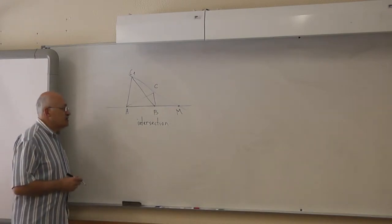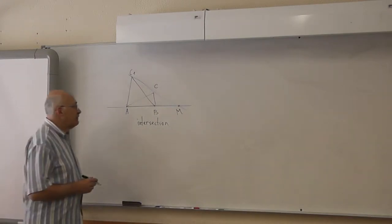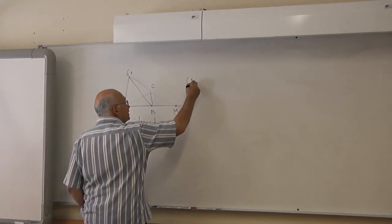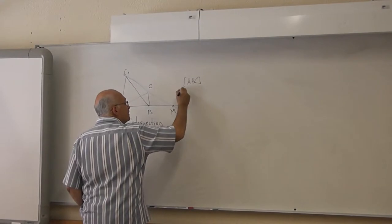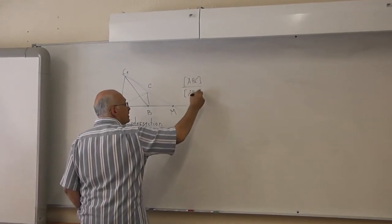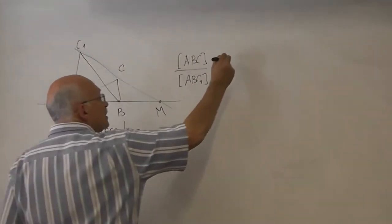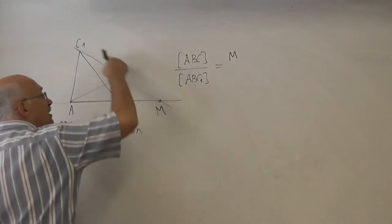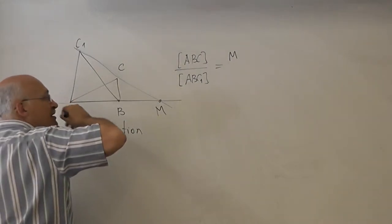To the intersection point of two lines M, then the ratio of the area ABC and ABC1 equals the ratio in which the point M divides the segment CC1.